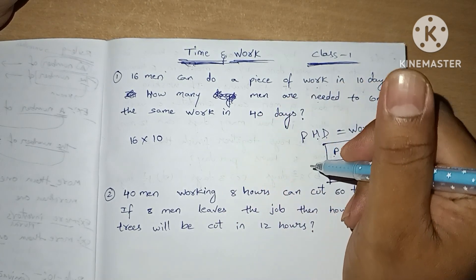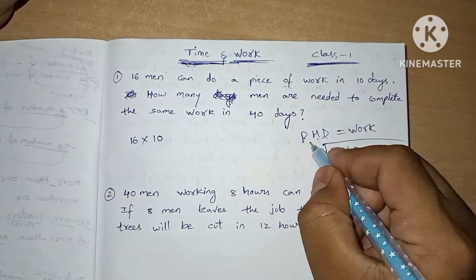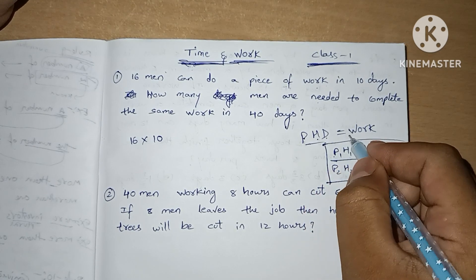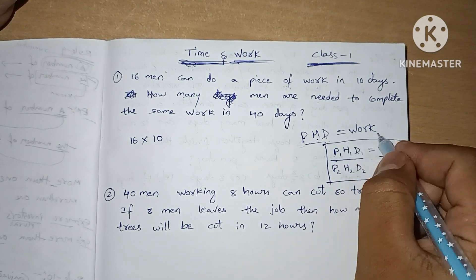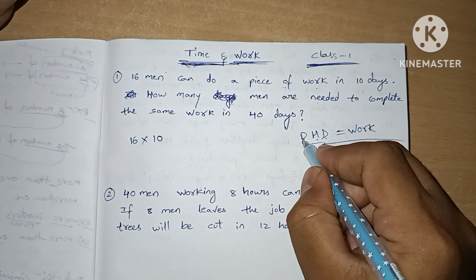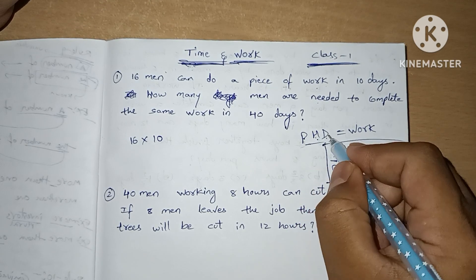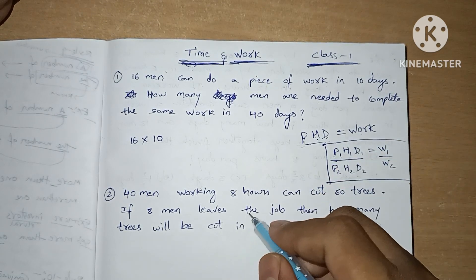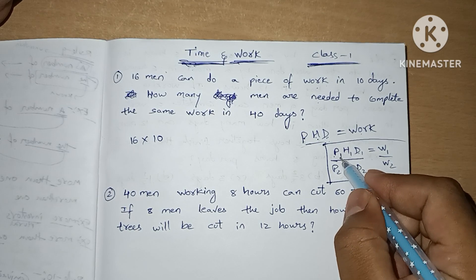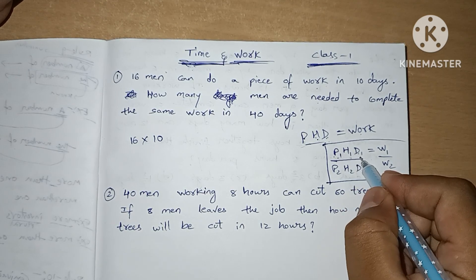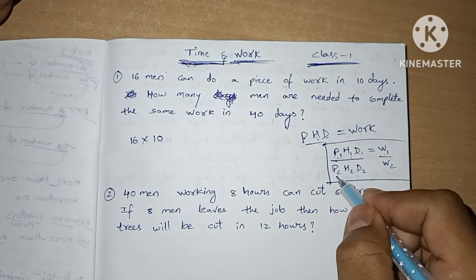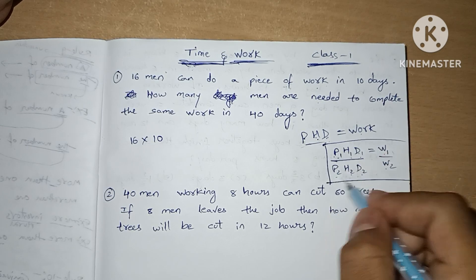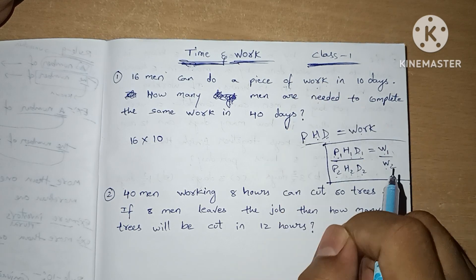We are going to learn about PhD. PhD is nothing but a degree, but here we are using PhD as work. P means persons, H means hours, D means days, and work. We actually use the formula P1 × H1 × D1 = W1 and P2 × H2 × D2 = W2. This is the formula we use in this concept.